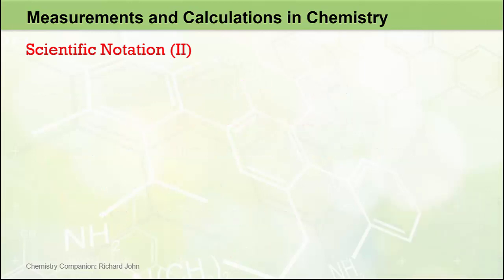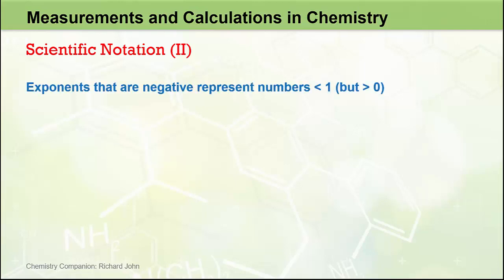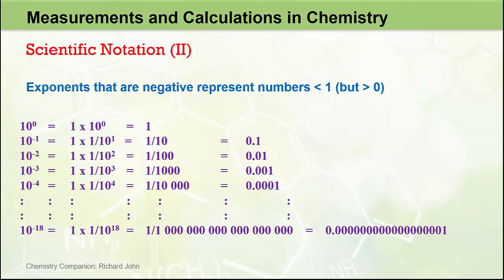Exponents that are positive represent numbers greater than 1, but exponents that are negative represent numbers less than 1, as this table shows. We're not talking about negative numbers — we're talking about numbers between 0 and 1, fractions. Again, when 10 is raised to the power of 0, that corresponds to the number 1. So a number like 1.9 times 10 to the 0 is actually equal to 1.9 times 1, which just equals 1.9. As before, the position of the decimal place does not move when we have an exponent of 0.